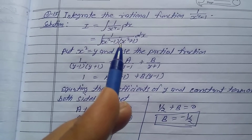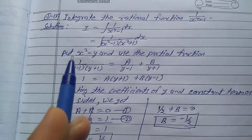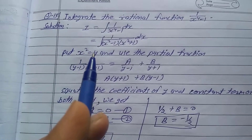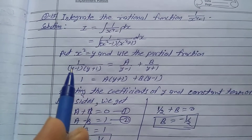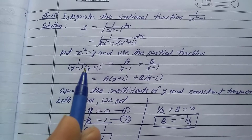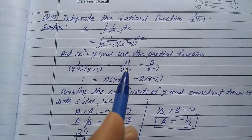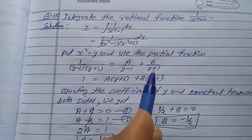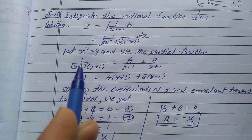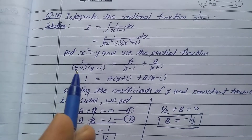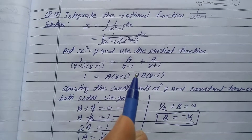For partial fractions, first put x square equal to y. So 1 upon bracket of y minus 1 into bracket of y plus 1 is equal to A upon y minus 1 plus B upon y plus 1. This is a proper fraction expressed in partial fractions.